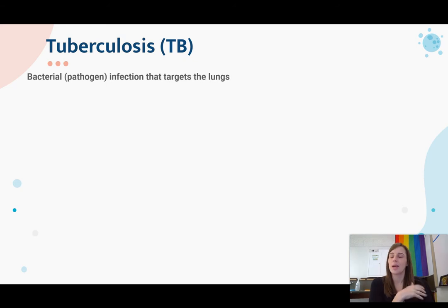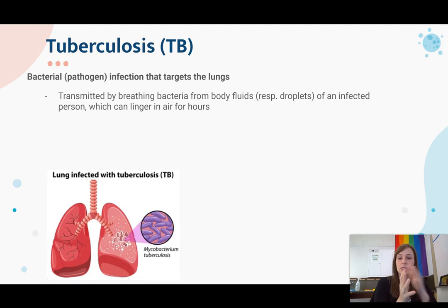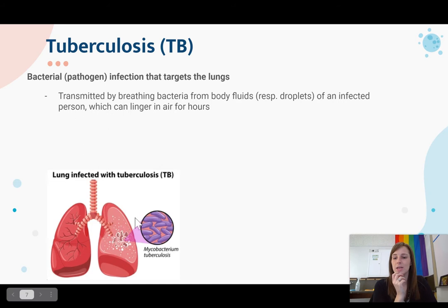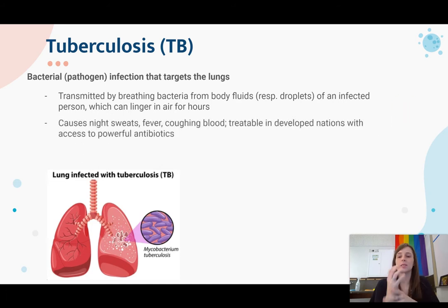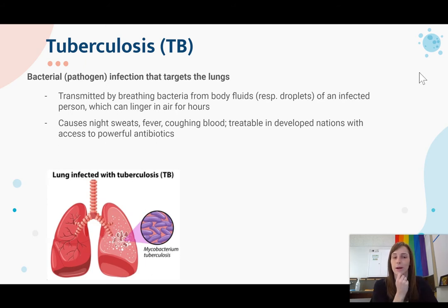Another disease is tuberculosis, a bacterial infection that targets the lungs. This used to be very common in the United States in the early 1800s and 1900s. It is transmitted by breathing bacteria from body fluids, especially respiratory droplets — if somebody coughs on you and they have tuberculosis, that's how you can get it. It can also linger in the air for hours. The bacteria gets into the lungs and can actually destroy them, causing night sweats, fever, coughing, and blood. It is treatable in developed nations with access to powerful antibiotics, but we see it in much higher amounts in developing nations.